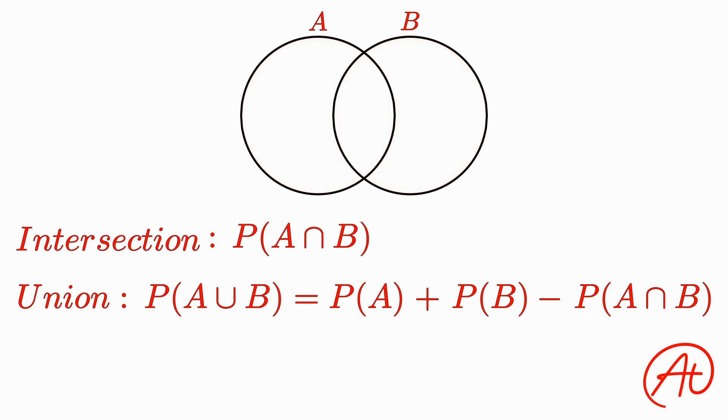Finally, the last thing to cover is something called the conditional, which is written like this and read as the probability of A given B. Basically, say we already know that B is going to occur. Given that condition, we are looking to find what the probability of A also occurring is.